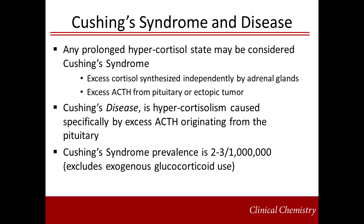Initially described in 1912 by Harvey Cushing, Cushing's syndrome is generally defined by excess glucocorticoids, primarily cortisol. Cushing's syndrome arises from a variety of states causing hypercortisolism, including benign or malignant adrenal tumors, adrenal hyperplasia, pituitary adenoma, excess hypothalamic CRH release, and ectopic ACTH-secreting tumors, which are usually neuroendocrine in origin.